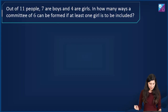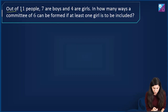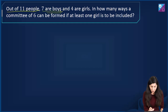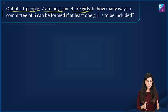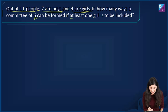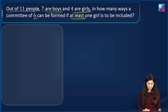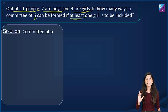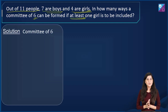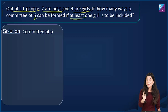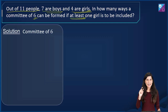The very first problem on your screen says: out of eleven people, there are seven boys and four girls. In how many ways can a committee of six be formed if at least one girl is to be included? I will discuss this question with three methods. It's possible all three are correct, all three are wrong, or some are correct and some are wrong. Your responsibility is to tell me in the comment box what is correct and what is wrong — and if wrong, why.